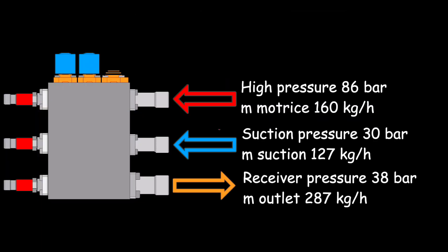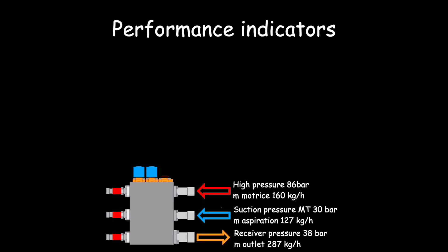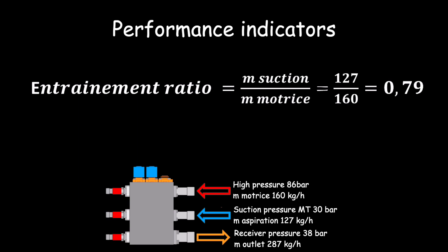The performances of an ejector are represented by two indicators. The entrainment ratio, which is the secondary mass flow lifted divided by the primary mass flow used as motive force. In our example, the ejector lifts 127 kg per hour for 160 kg per hour of primary mass flow, which means an entrainment ratio of 0.79.